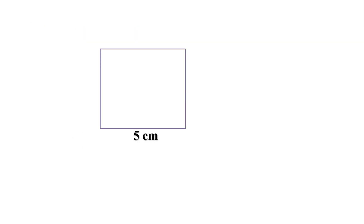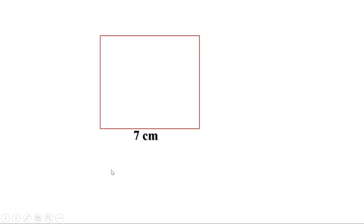Suppose a square is given with side 5 centimetres. The area of a square is side × side, or side squared. Therefore the area is 5 × 5, or 5² = 25 square centimetres. Suppose another square has side 7 centimetres. Its area is 7 × 7, or 7² = 49 square centimetres.